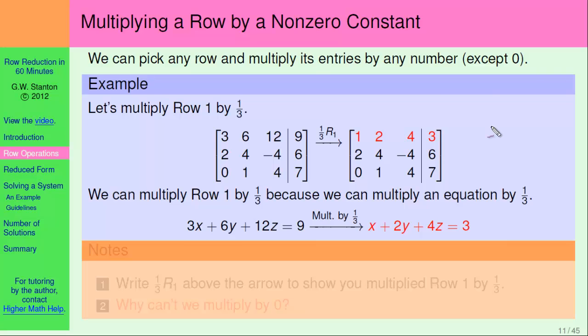Well the first row, three, six, twelve, nine, corresponds to the equation 3x + 6y + 12z = 9. And so what we did was, we just took one-third and multiplied both sides of the equation by that, and that gave us a new equation. So that's okay, as long as we multiply both sides by the same number, we get an equivalent equation.